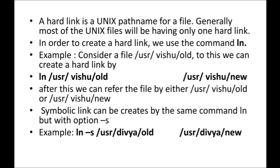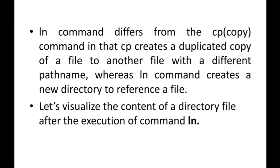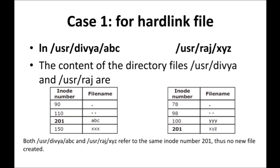A symbolic link symbolically contains the link to the particular file. So far you should know: how to create a symbolic link using 'ln -s', and how to create a hard link using 'ln'. Now see the difference clearly — Case 1: Hard link. I'm creating a hard link using: 'ln /user/divya/abc /user/raj/xyz'. Here you can see the contents of the directory files for user 'divya' and user 'raj'.